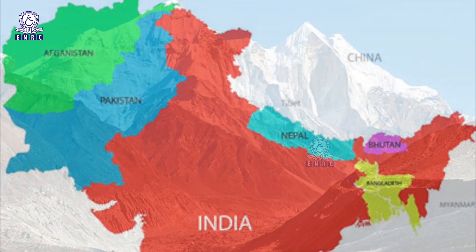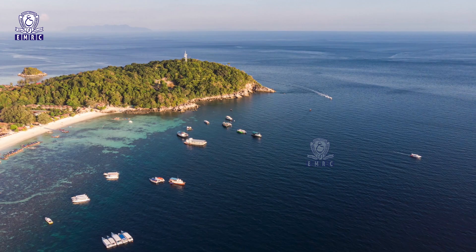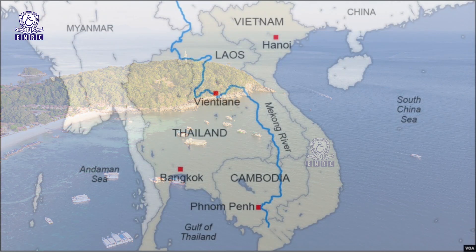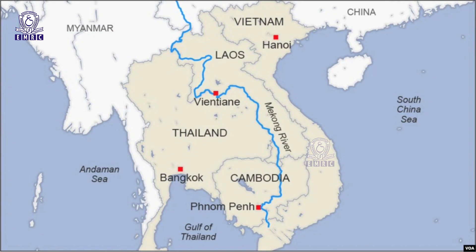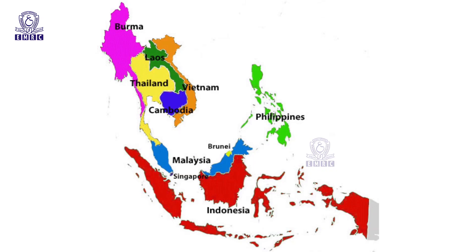Biodiversity hotspots in India: First, the Himalayas, which includes the entire Indian Himalayan region and parts falling in Pakistan, Tibet, Nepal, Bhutan, China, and Myanmar. The next region is Indo-Burma, which includes entire northeastern India except Assam and the Andaman group of islands, and also includes Myanmar, Thailand, Vietnam, Laos, Cambodia, and southern China. The next is the Western Ghats and Sri Lanka region. The other region is the Sundaland, which includes Indonesia, Malaysia, Singapore, Brunei, and the Philippines.